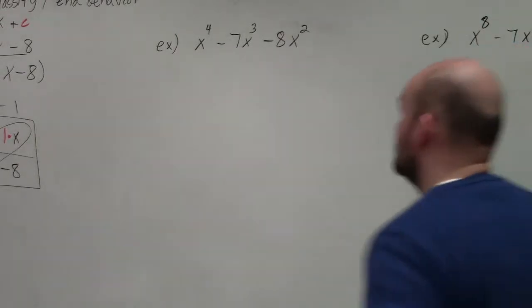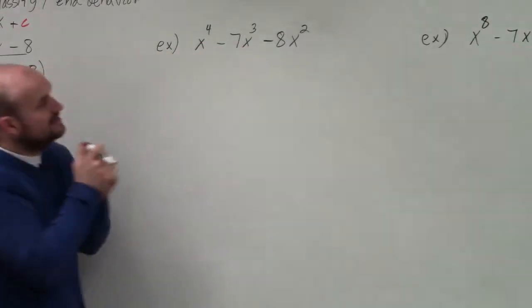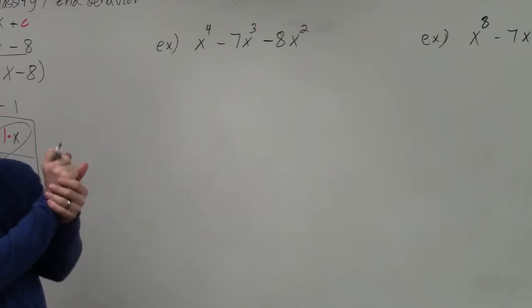Pay attention, please. So we have x to the fourth minus 7x cubed minus 8x squared.